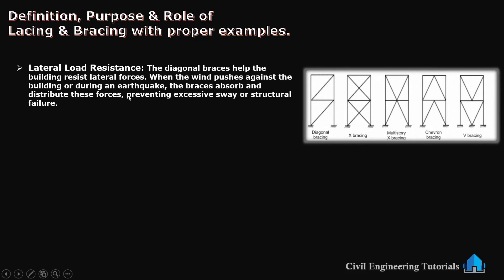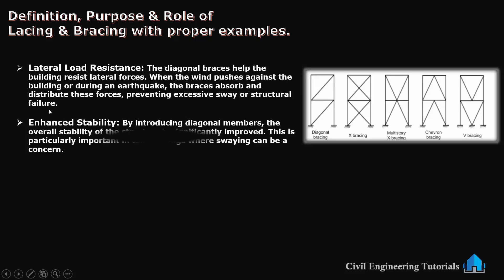These are the lateral load resistance functions: the diagonal bracing helps the building resist lateral forces. When the wind pushes against the building or during an earthquake, the braces absorb and distribute the forces, preventing excessive sway or structural failure. Enhanced stability: by introducing diagonal members, the overall stability of the structure is significantly improved — particularly important in tall buildings where swaying can be a concern. Types of bracing include diagonal bracing, X bracing, K bracing, and multi-storied X bracing.